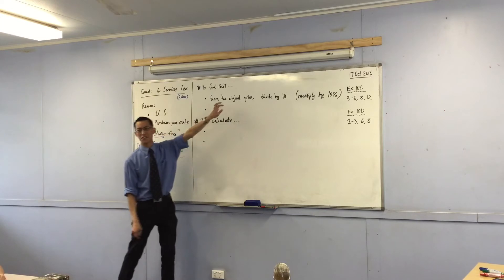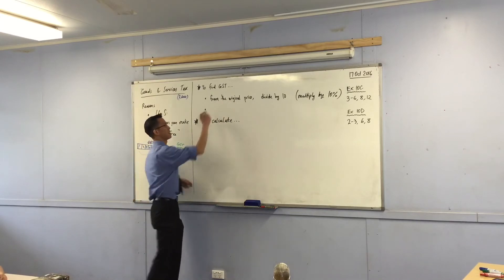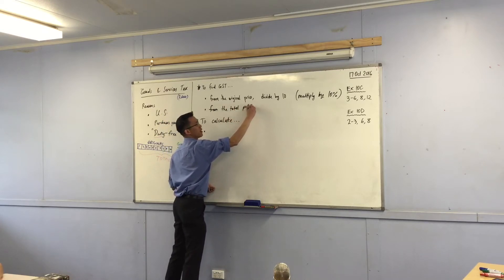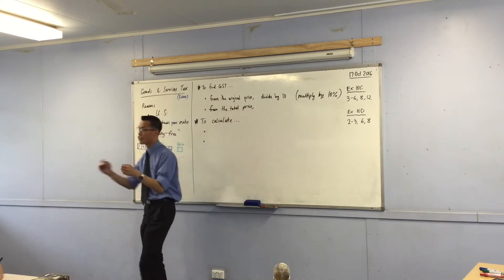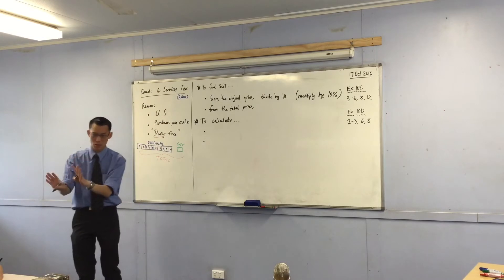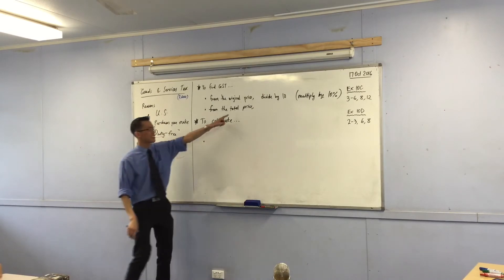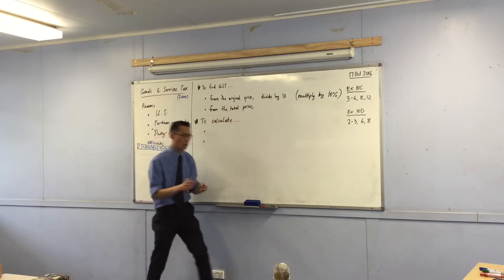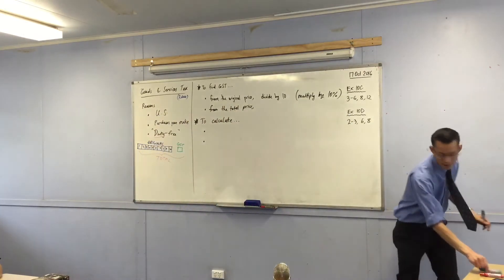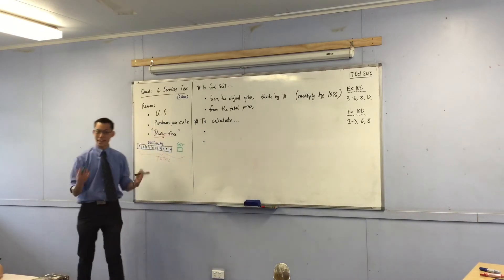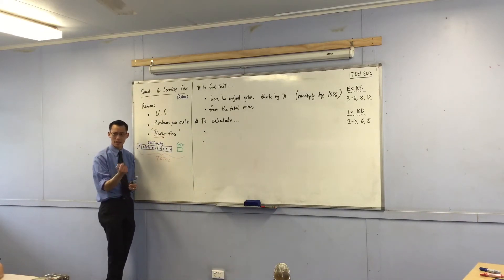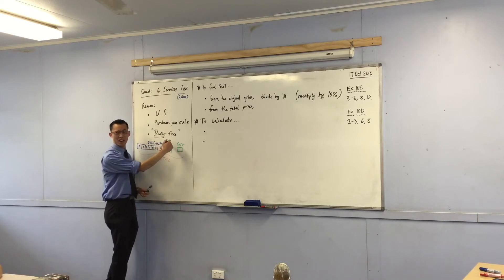If you don't want to find the GST from the original price, but instead from the total price, this is something that we in Australia do very frequently, because remember I said, the GST is included already, usually. So we're usually seeing the total price, not the original price. So this is something we see much more. Now looking at our diagram over here, you've got your 1, 2, 3, 4, 5, 6, 7, 8, 9, 10 original parts, and then the GST is kind of like the 11th part. Does that make sense?